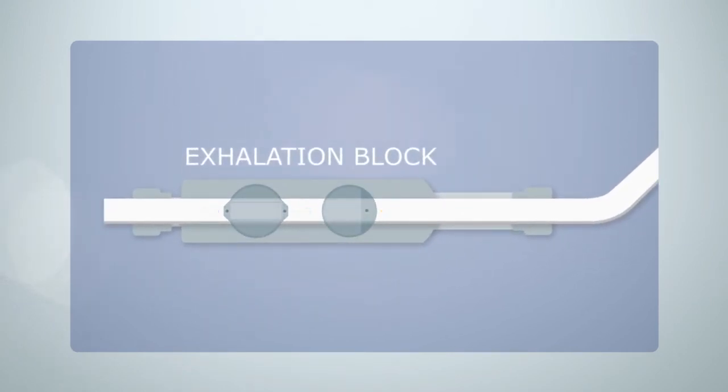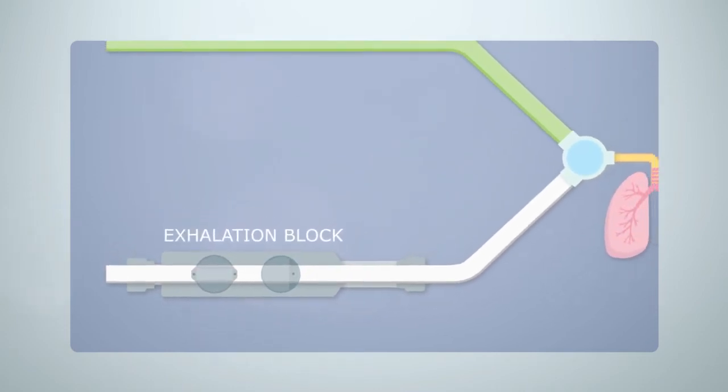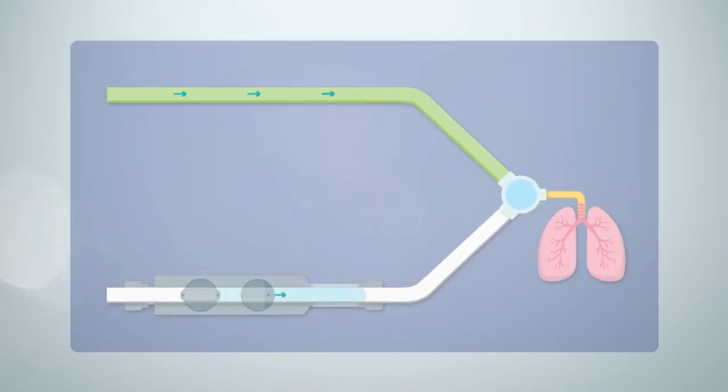When you want the patient to receive a breath, a forward-facing jet gives a controlled pulse of air. This acts as a pneumatic piston adding to the bias flow and diverting gas into the patient's lungs via the Y connector.